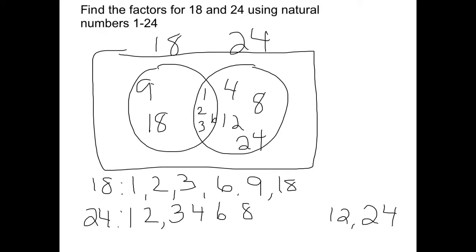Now since our directions said we need to use natural numbers 1 through 24, we need to make sure every number is accounted for. Any number that is 1 through 24 that does not appear on either list needs to go outside the circles. So we check: We have 1, 2, 3, 4, but no 5, so 5 goes outside. There's a 6, no 7, so we add 7. There's 8 and 9, no 10 or 11. We have 12, so we need 13, 14, 15, 16, 17. We have 18, then we need 19, 20, 21, 22, 23.